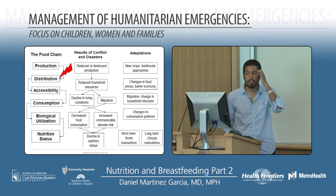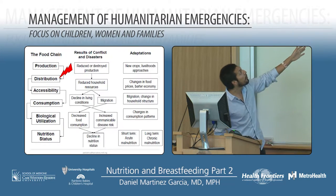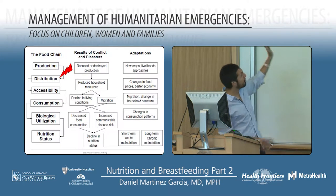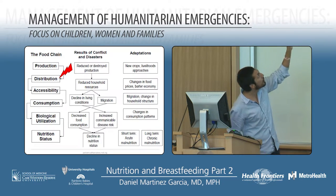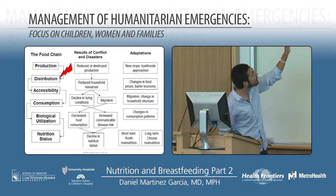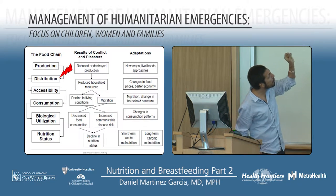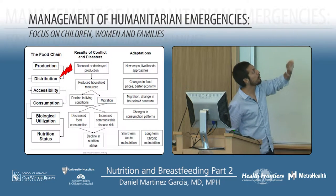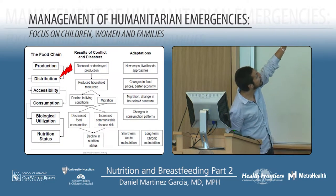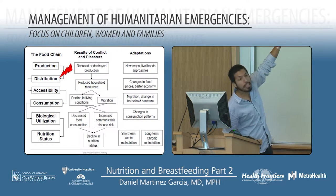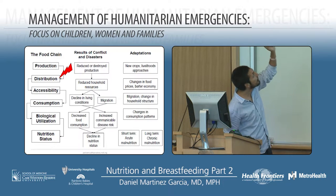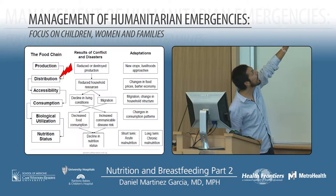Looking at the big picture of what part is being affected: on one side is the food chain — if it's a problem at the production level, distribution, access, consumption, biological use, or nutritional status, there can be affectation at different parts. Normally it's a problem in distribution, or in a natural disaster at the production level, or sometimes roads have been cut off, so it's a problem in access to food.